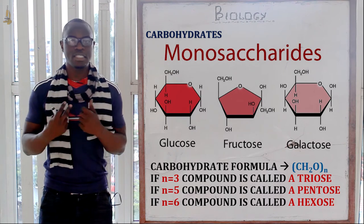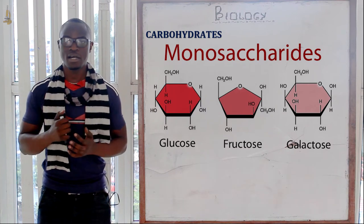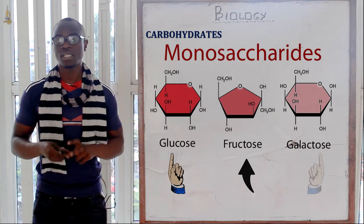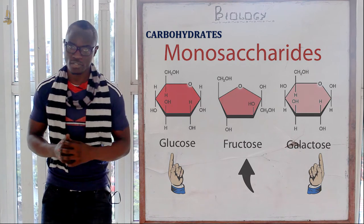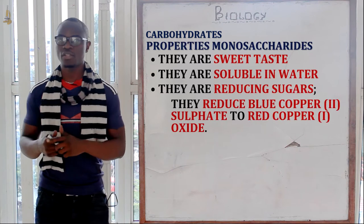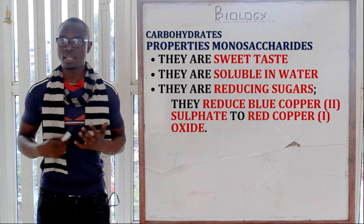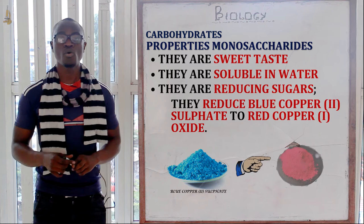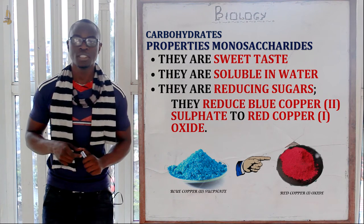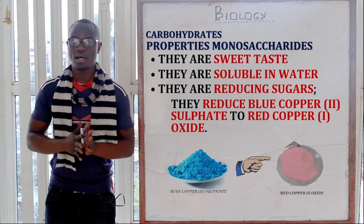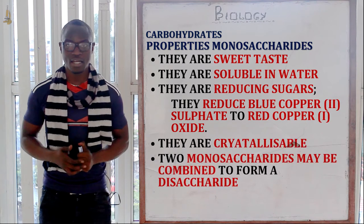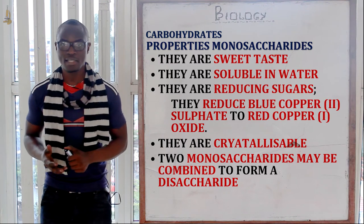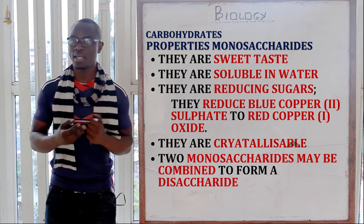Monosaccharides are divided into three types: glucose, fructose, and galactose. Their properties include being sweet tasting, soluble in water, and reducing sugars — meaning they reduce blue copper sulfate solution into red copper oxide solution. They are also crystalline in nature, and two monosaccharides may be combined through condensation to give a disaccharide.